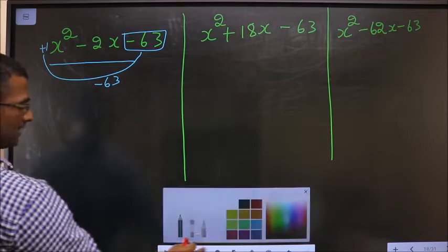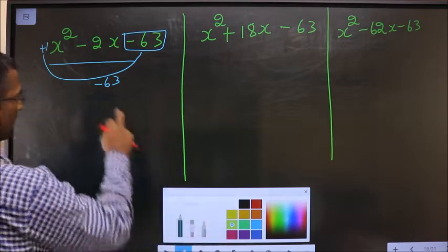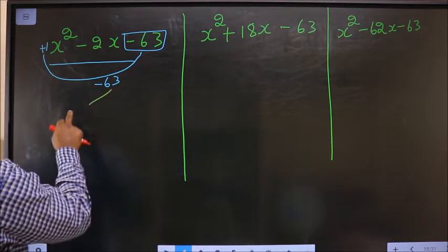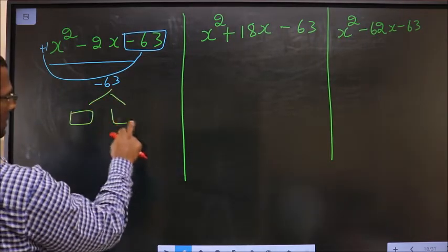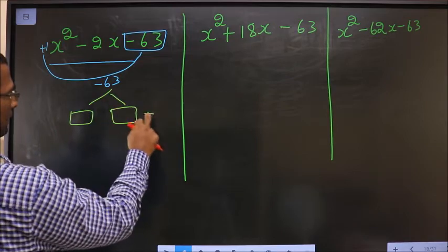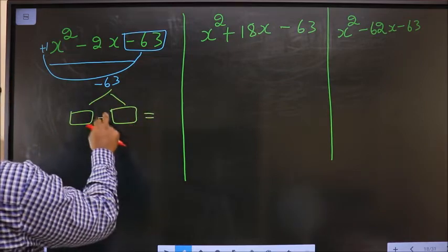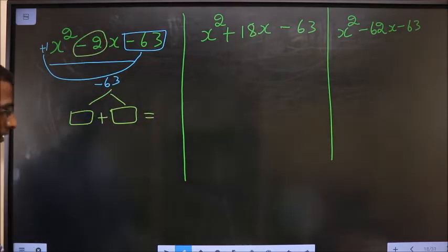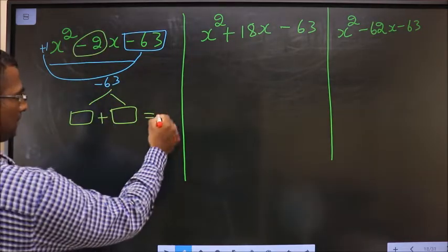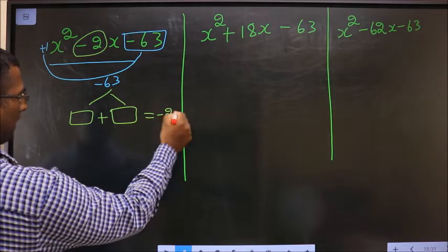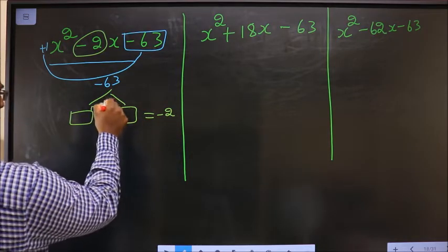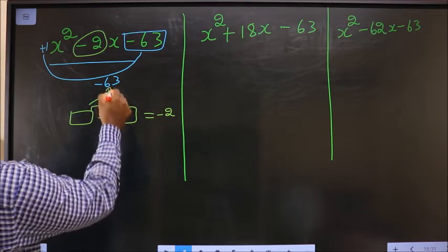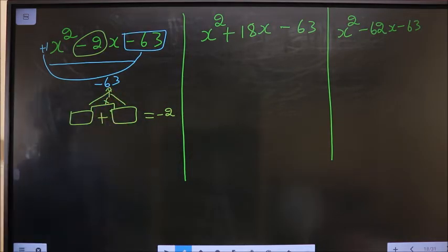Next, I should look out for two numbers such that when I add them, I should get minus 2, and when I multiply these two, I should get minus 63.